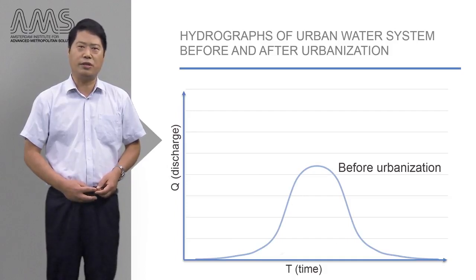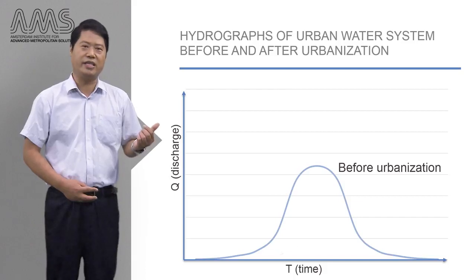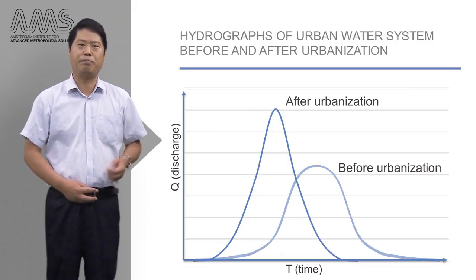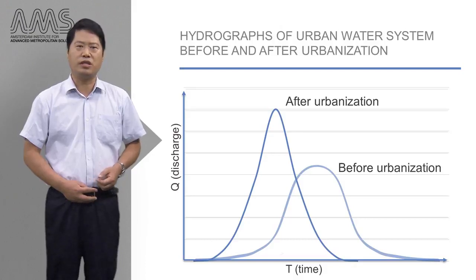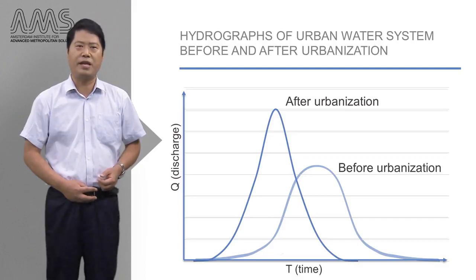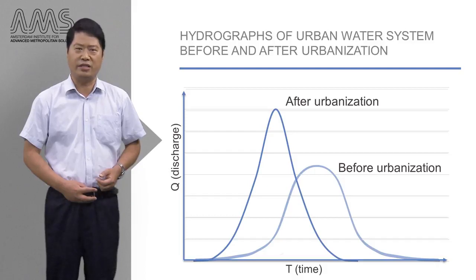Here you can see the runoff of water before urbanization. Notice the delay in time before runoff occurs. After urbanization, the hydrograph shows a higher peak flow, early peak time, and more runoff volume. Water can no longer infiltrate into the ground. It is not retained by green space and flows at higher velocity due to smoother surfaces. This results in more and more serious flooding, and less infiltration of water during and after precipitation. As a consequence, the areas will get drier and increase temperatures, hence stimulating the urban heat island effect.